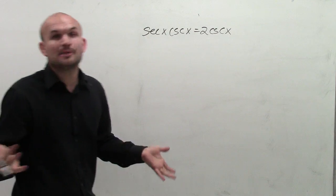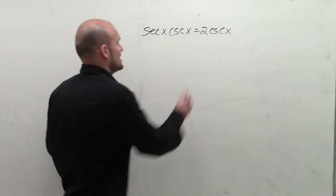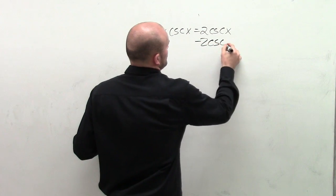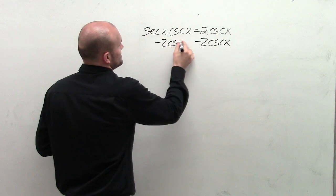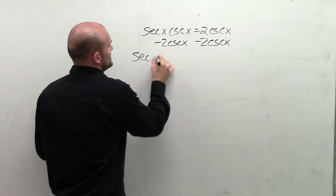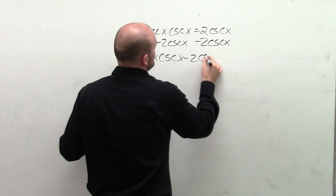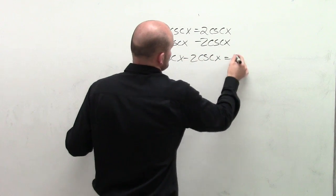Just like any equation, the main important thing we need to do is first get all of our variables onto the same side. So I'm going to subtract 2 cosecant of x from both sides. Therefore, I'm going to have secant of x times cosecant of x minus 2 cosecant of x equals 0.